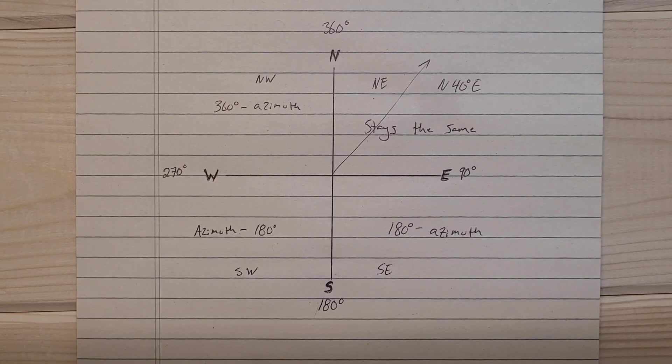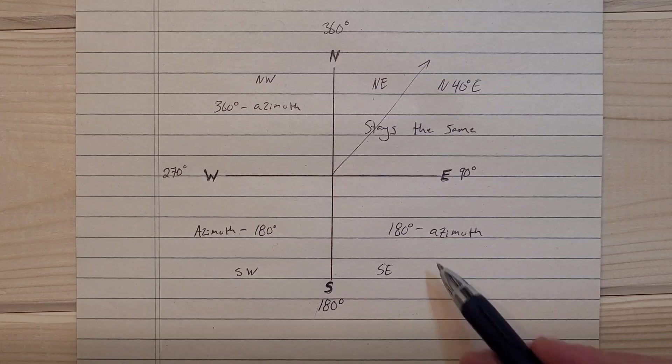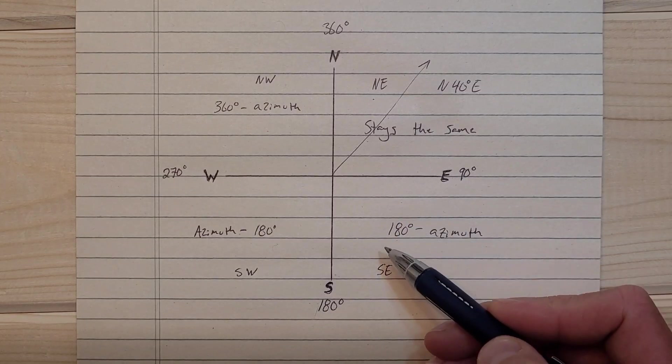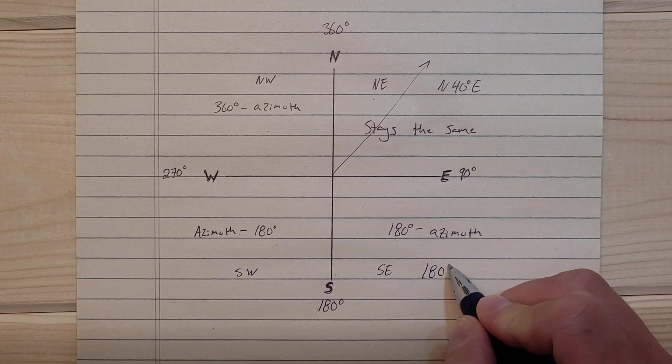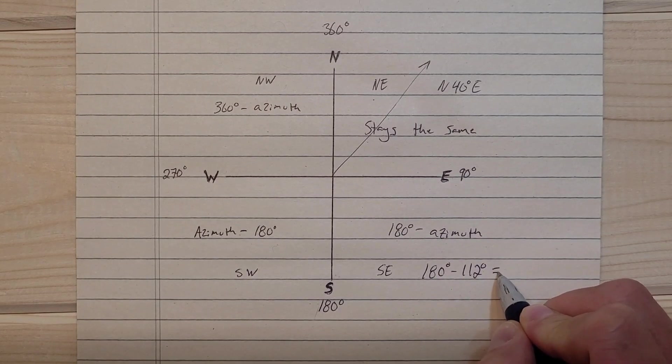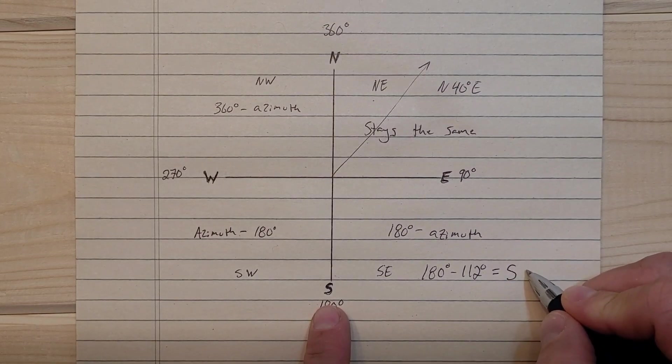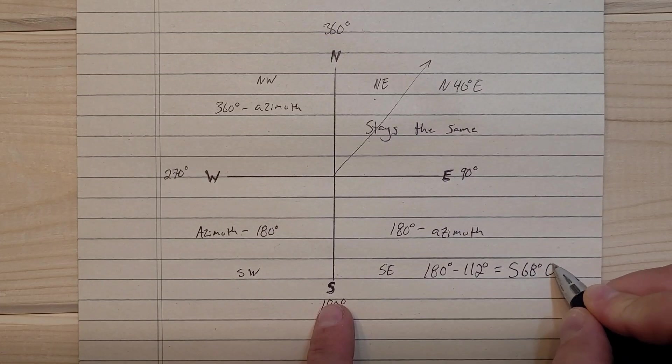And say that you were given an azimuth of 112 degrees. 112 falls in this quadrant here, so you say 180 degrees minus 112 degrees, and that equals south 68 degrees east.